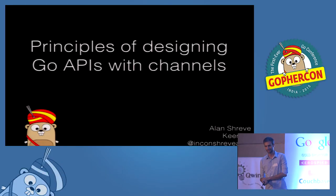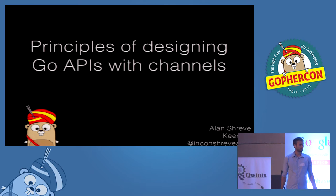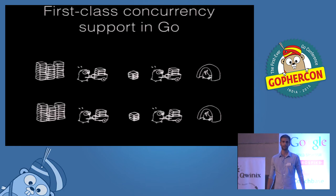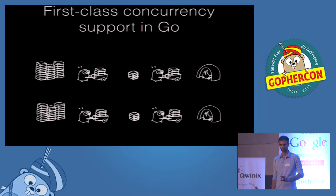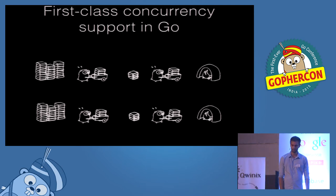Today we're going to be talking about channels — how to design APIs that use channels specifically. There are a lot of selling points of Go, and one of the main ones is the excellent baked-in support for concurrency: lightweight user-mode threads, goroutines, and channels as a concurrency primitive to implement CSP concurrency, making doing things concurrently and handling things in parallel really easy. It's one of the selling points of the language.